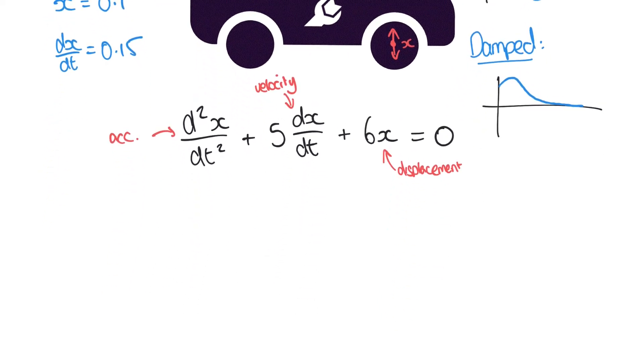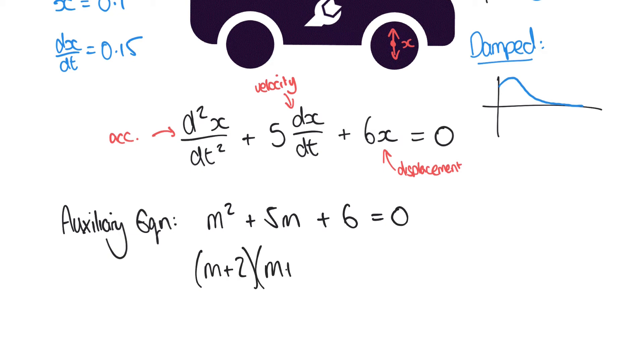So as with our previous examples, the first thing we're going to do is to draw out the auxiliary equation, and the auxiliary equation is going to look like this: m² + 5m + 6 = 0. We can solve this by factorization: (m + 2)(m + 3) = 0. You could solve by using the quadratic formula as well, but either way we find that m is equal to -2 or -3.